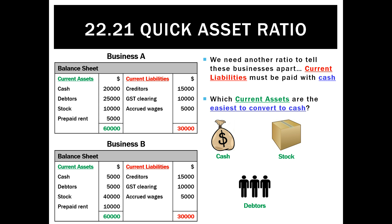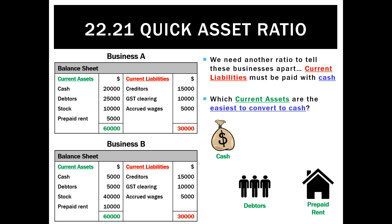Stock is problematic though. If stock could be turned into cash so easily, everybody would be selling it and we'd all be doing fantastically well. Clearly it's difficult to sell stock — that's the challenge of business. So that's a little harder to convert into cash. It's very difficult to sell stock and then collect the money, so why don't we exclude that from our working capital ratio.